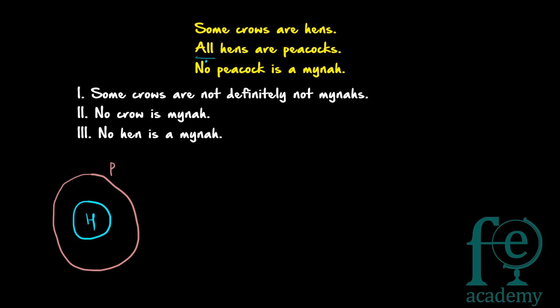Now, some crows are hens — what are the different possibilities? One possibility is the crow circle can come like this, overlapping partially. The second possibility is the crow circle can come wholly inside the peacock circle. So these are the two ways the crow circle can be represented — either by this yellow circle or by this red circle. Now, no peacock is a mina.